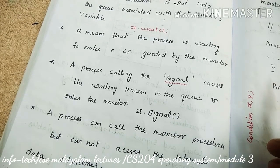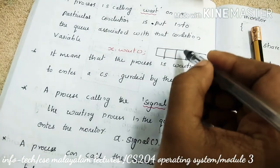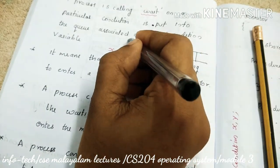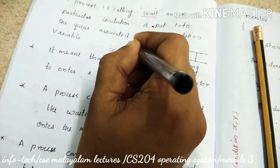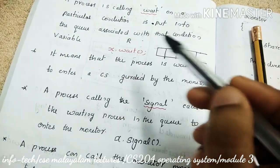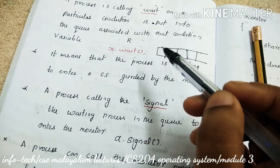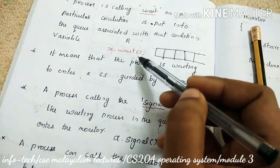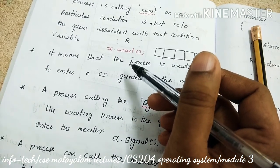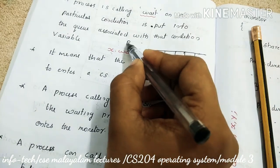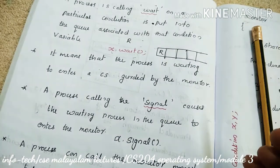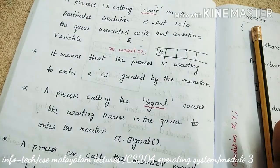For example, this is a queue of x. X is the condition variable. The queue has processes. X.wait is a system call. When invoked based on a particular function, the particular condition is met. A process is invoked. So our condition is satisfied. The process should be put into the waiting queue.